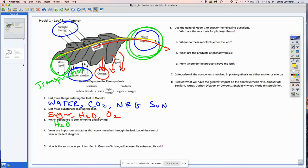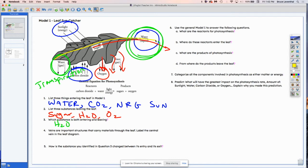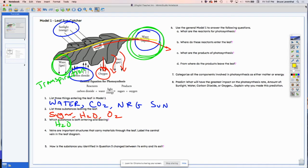How is the substance you identified in question three changed between its entry and its exit? So if you look at question three, it's saying which substance is both entering and exiting? Note the water is moving in to the leaf from the central vein, whereas water is actually leaving the leaf through the pores. And notice the dashed lines, which represents gas. So it is gas out and liquid in.